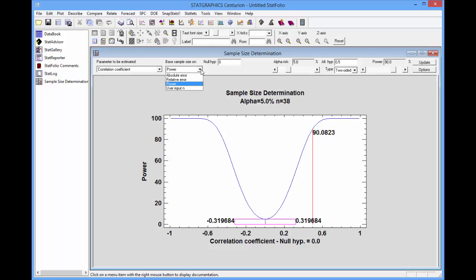I can base my sample size calculation on the absolute error, the relative error, the power, or even input my own value N. In this case, I'd like to control the power.